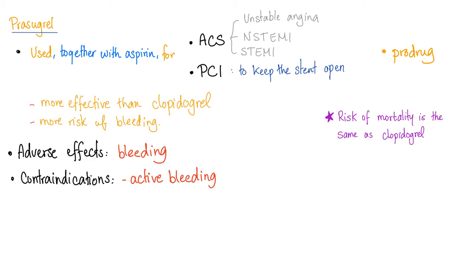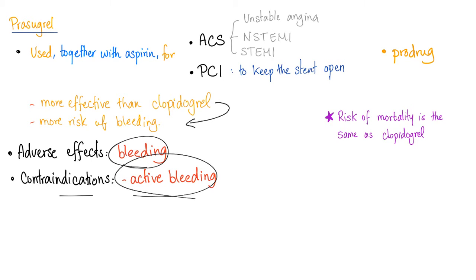Next is prasugrel, used together with aspirin for acute coronary syndrome — an umbrella term that includes unstable angina, non-ST elevation myocardial infarction (non-STEMI), and ST elevation myocardial infarction (STEMI). It is also used for percutaneous coronary intervention to keep the stent open. It is a prodrug, same as clopidogrel, but more effective than clopidogrel. However, there is a higher risk of bleeding. Contraindications include active bleeding and hemorrhagic stroke.